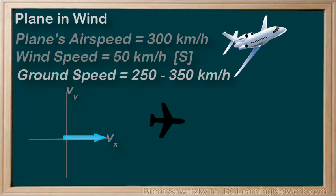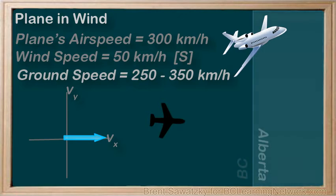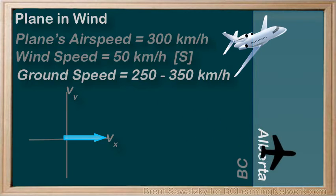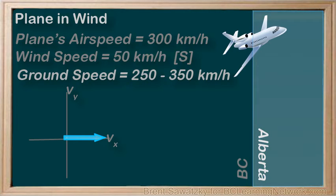If you wanted to head for a border over to the east as fast as you could — not caring about where along the border you crossed — you would want your Vx component to be a maximum. Sure, you'd end up being dragged south by the wind and cross the border down there somewhere, but your easterly motion would be a maximum.